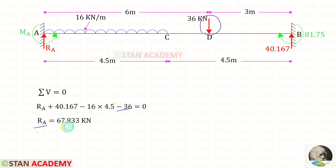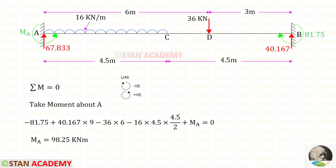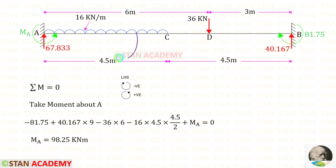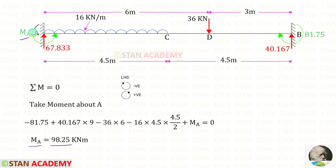For RA we will get 67.833. Now let us take a moment about A and find MA. MB is acting in the clockwise direction so it is negative. The vertical reaction RB is acting in the anticlockwise direction so it is positive with distance 9. The point load acts clockwise so it is negative with distance 6. The uniformly distributed load acts clockwise and is negative — with UDL we multiply the distance and divide by 2. Assuming MA acts anticlockwise it is positive, and we get a positive value, confirming MA acts in the anticlockwise direction.